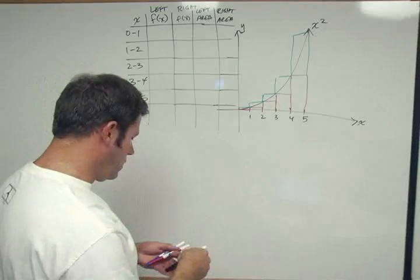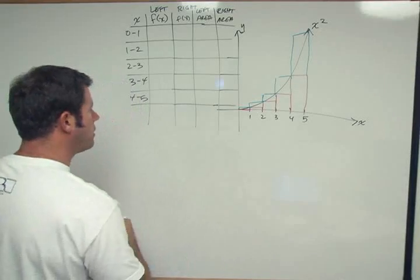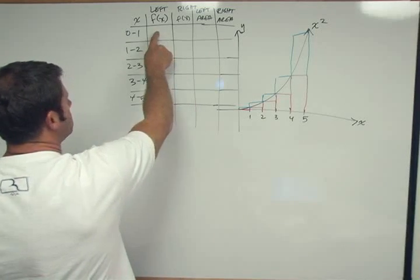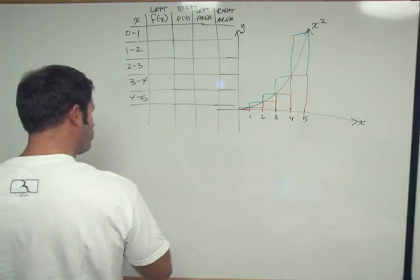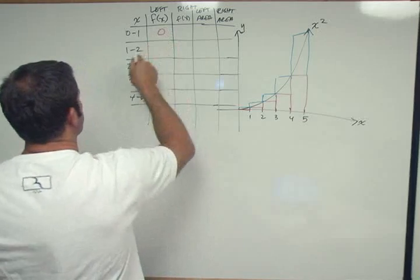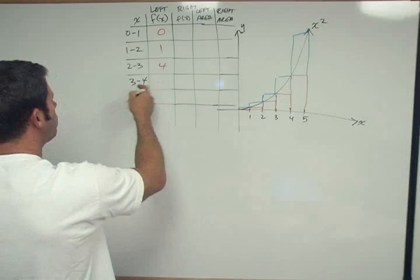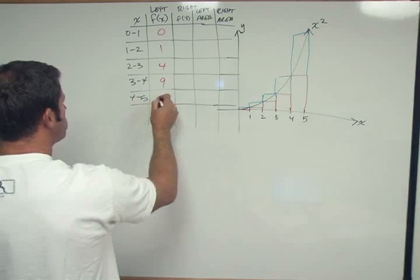So now we just have to plug in the numbers here, and we'll color code it to make it more obvious. So from 0 to 1, 0 squared is going to be 0. 1 to 2, 1 squared is 1. 2 to 3, 2 squared is 4. 3 to 4, 3 squared is 9. 4 to 5, 4 squared is 16.